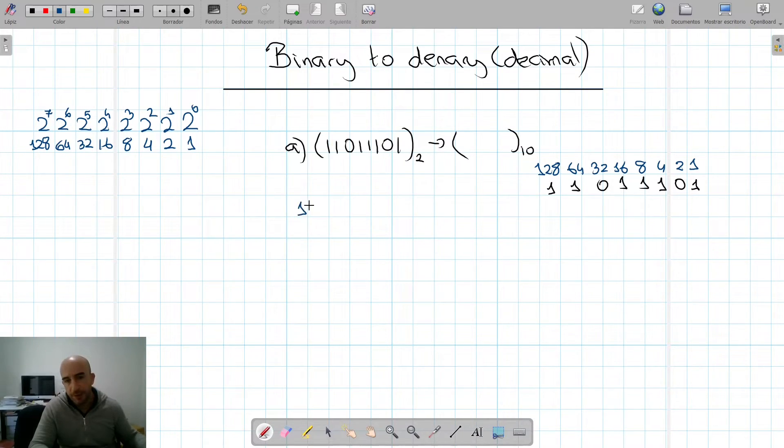For example, we would get 128 times 1 plus 64 times 1 plus 32 times 0 plus 16 times 1 plus 8 times 1 plus 4 times 1. But this is very long, and we don't really have to do this. Why? Because we already know that any number that's multiplied by 0 is 0.